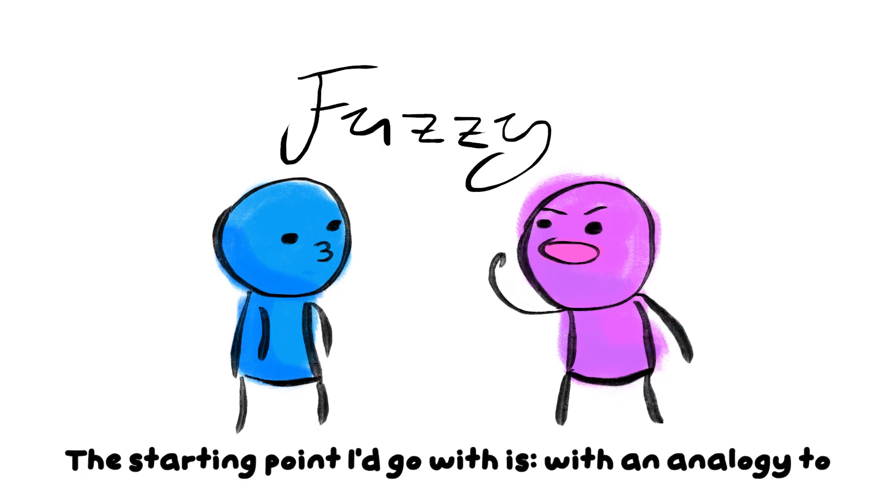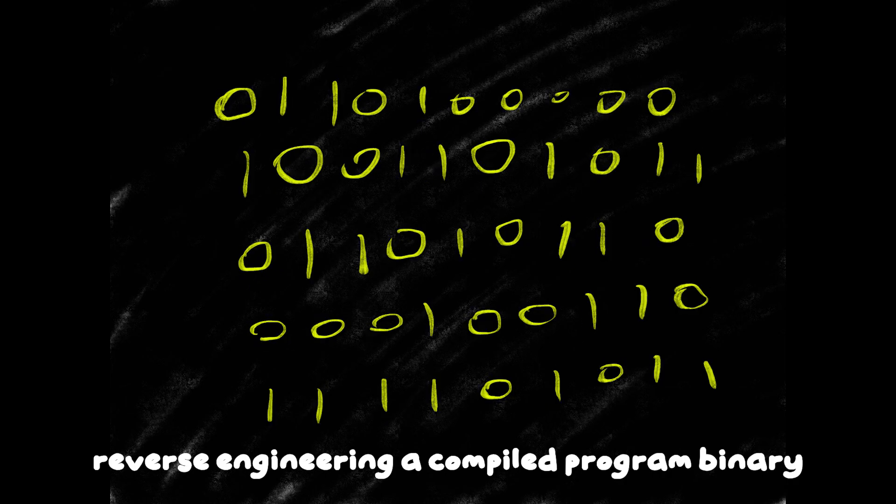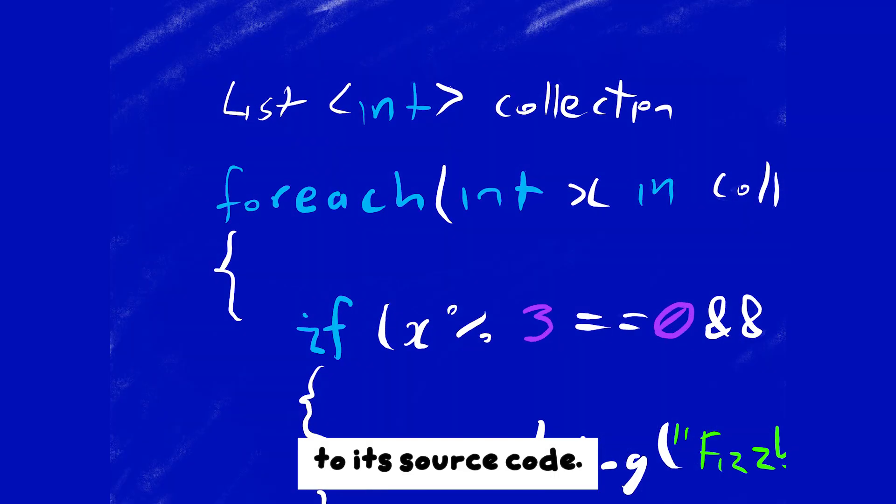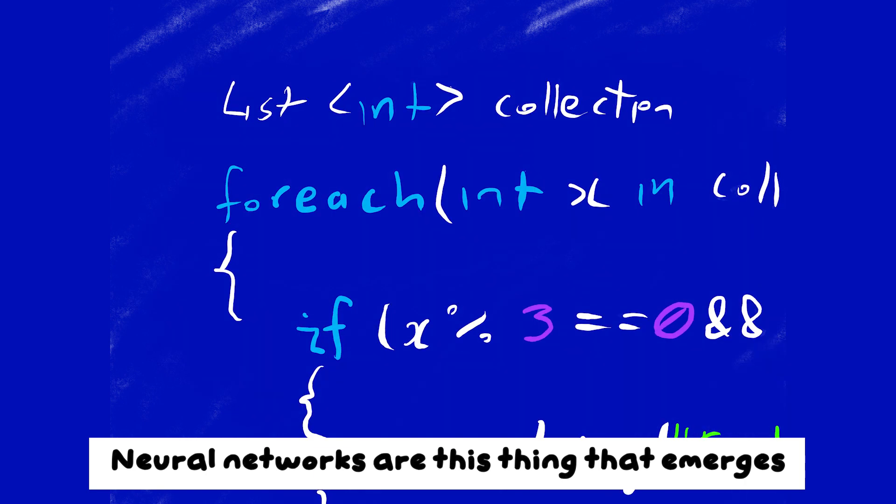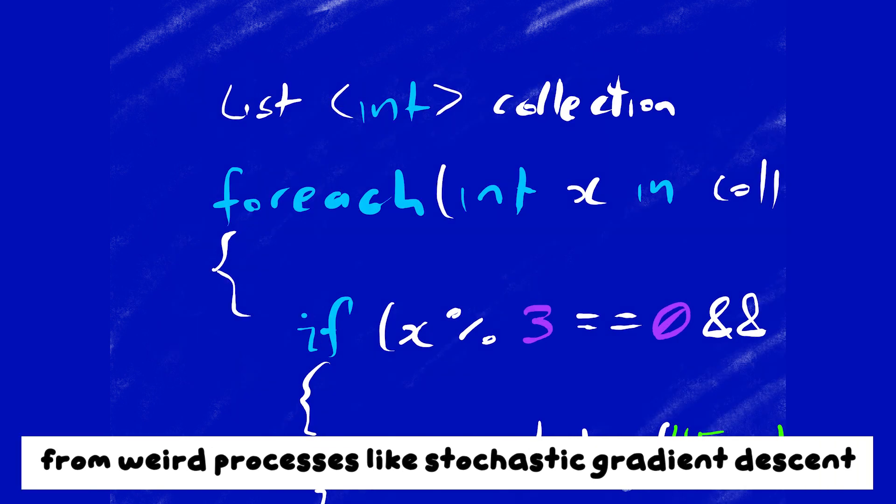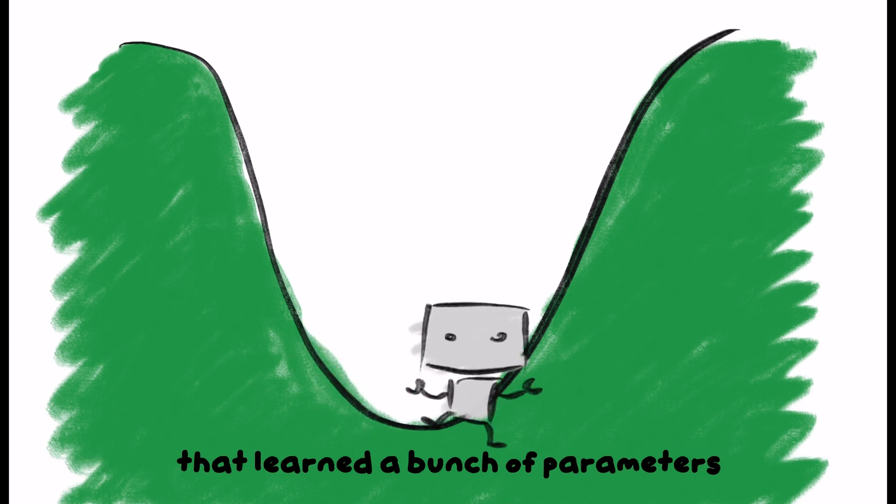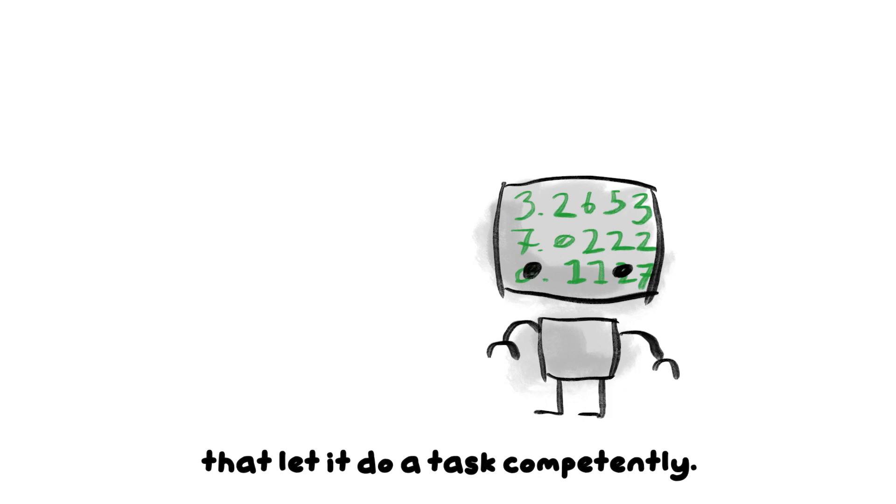The starting point I'd go with is an analogy to reverse engineering a compiled program binary to its source code. Neural networks are this thing that emerges from weird processes like stochastic gradient descent that's learned a bunch of parameters that let it do a task competently.